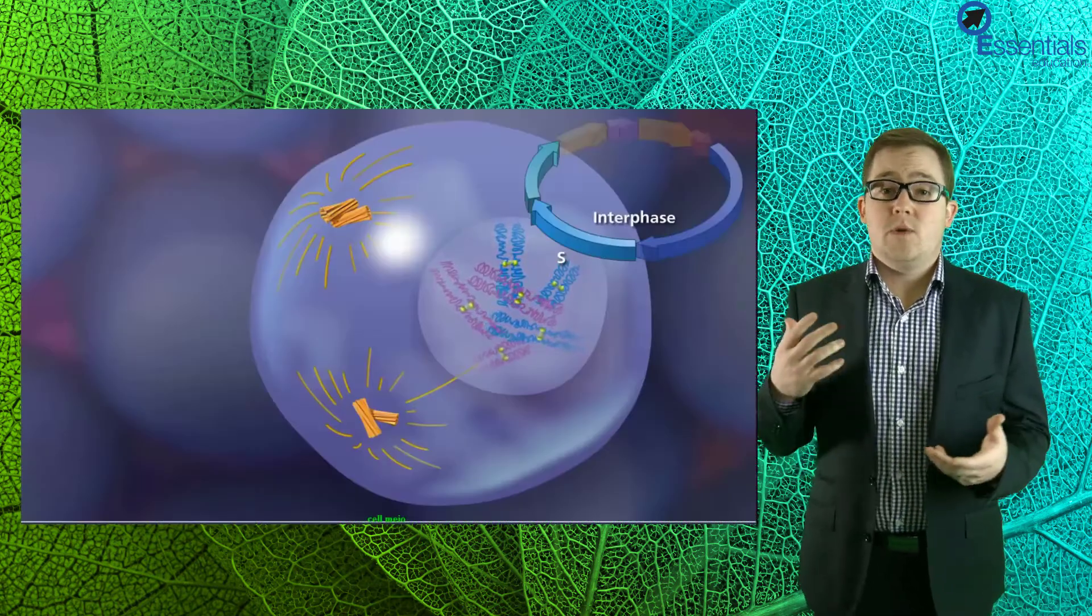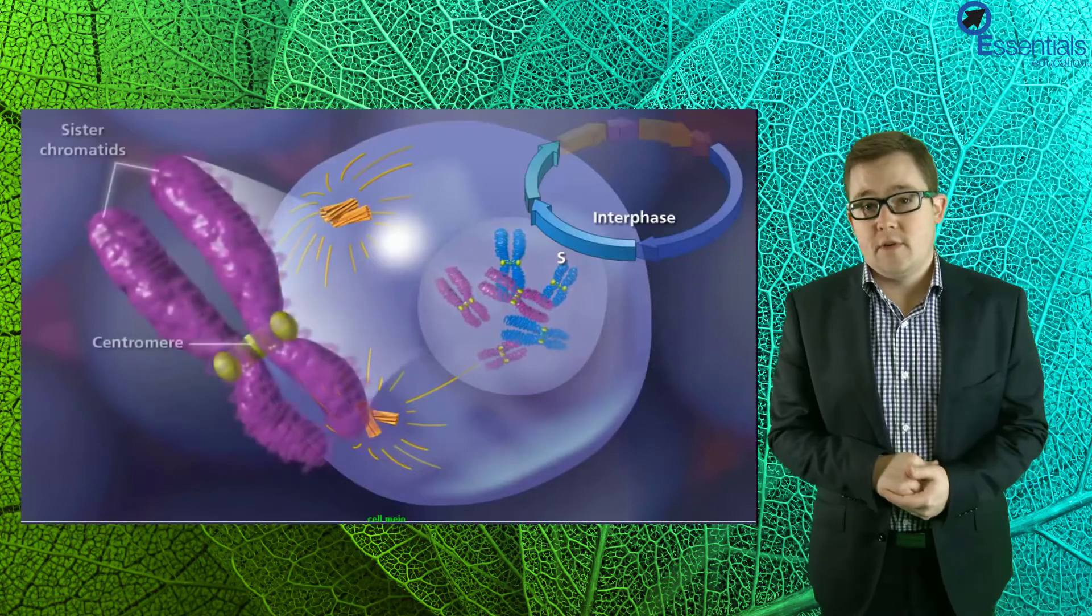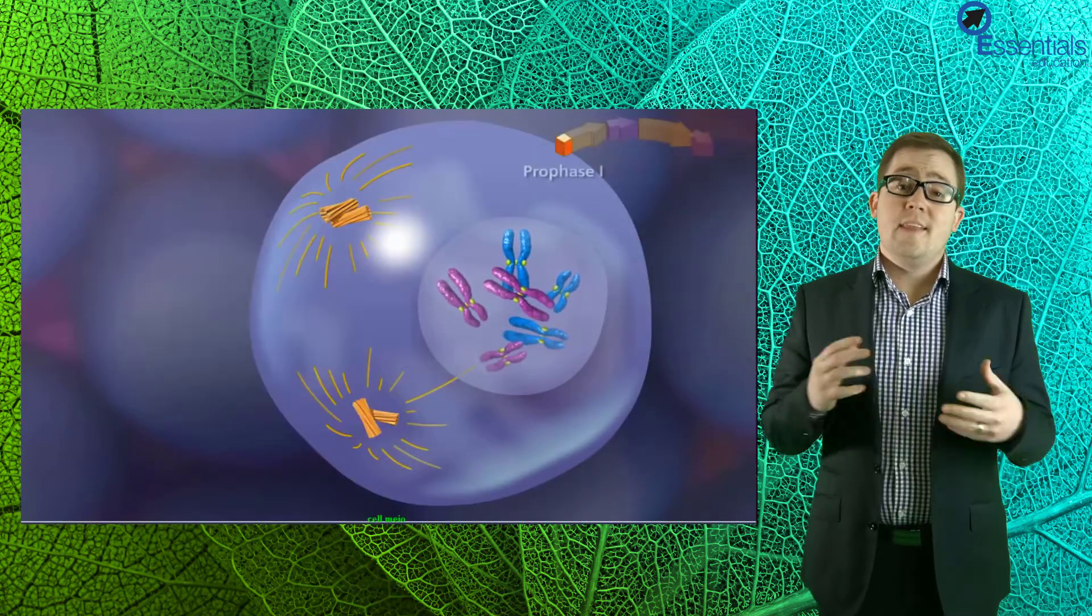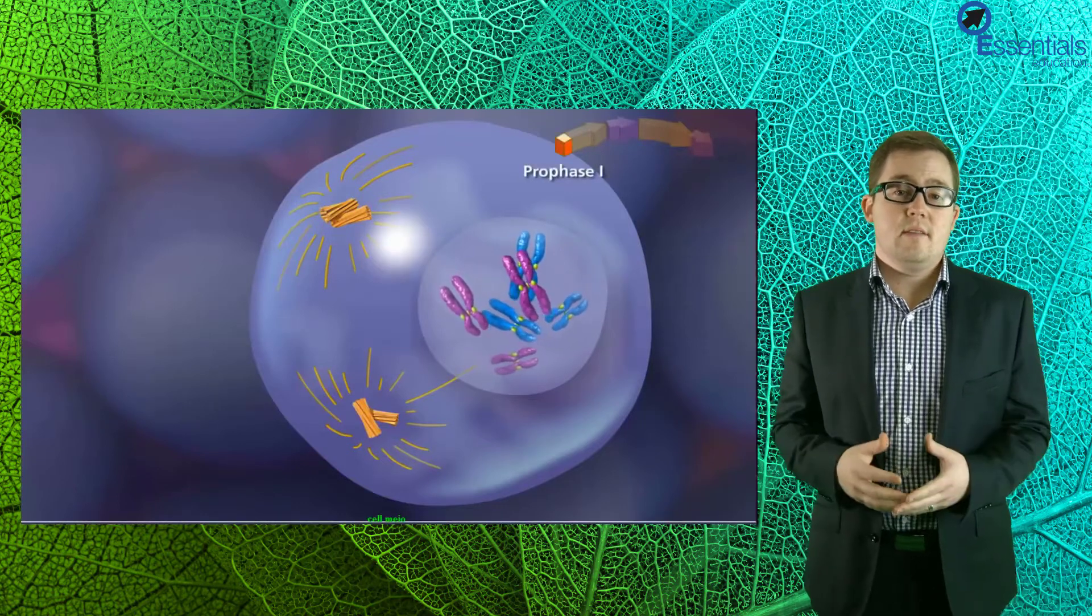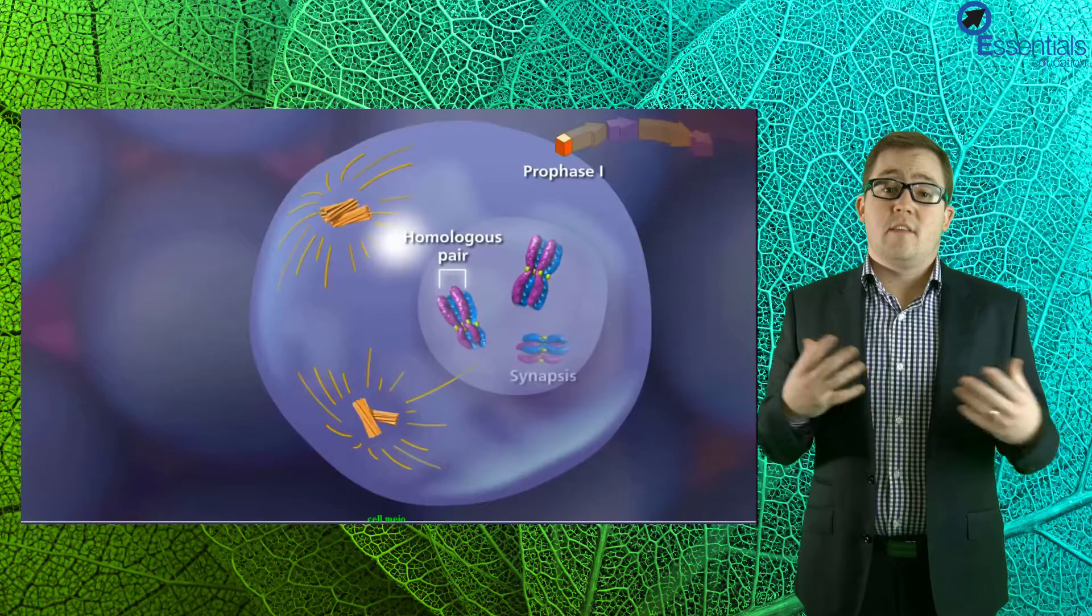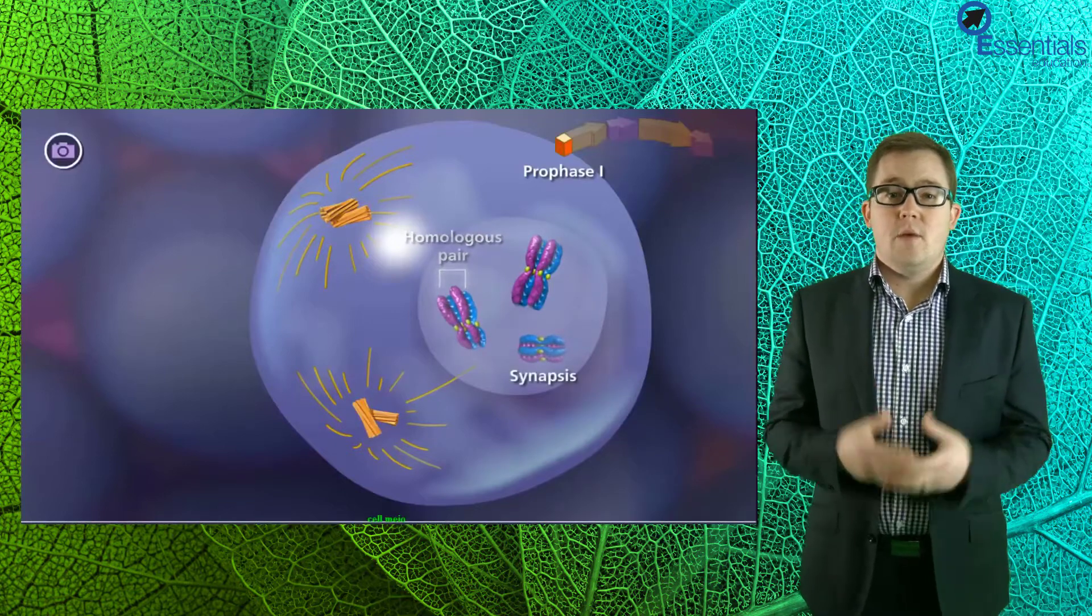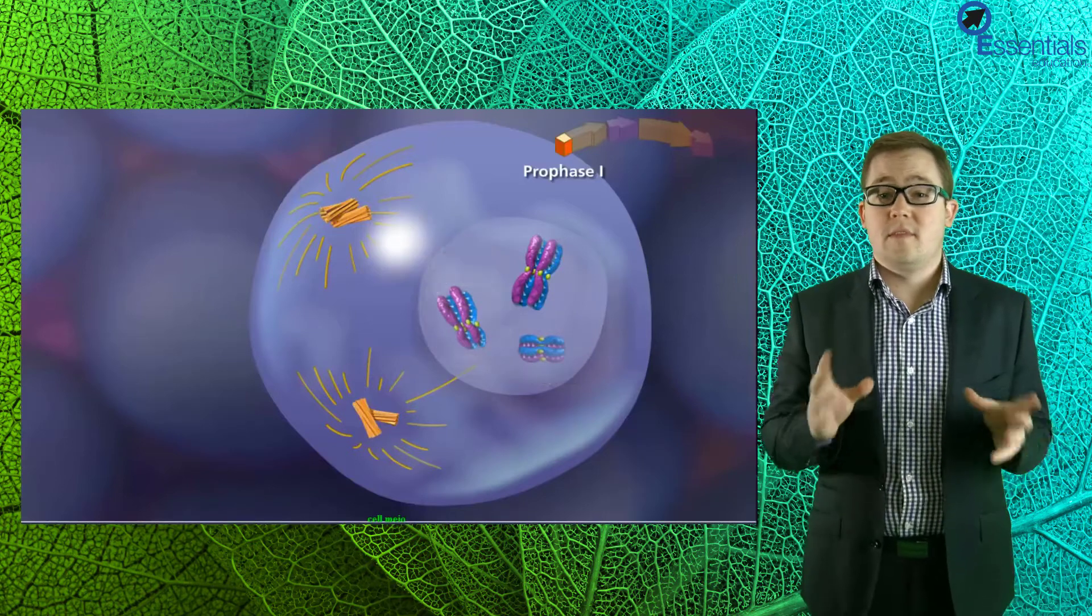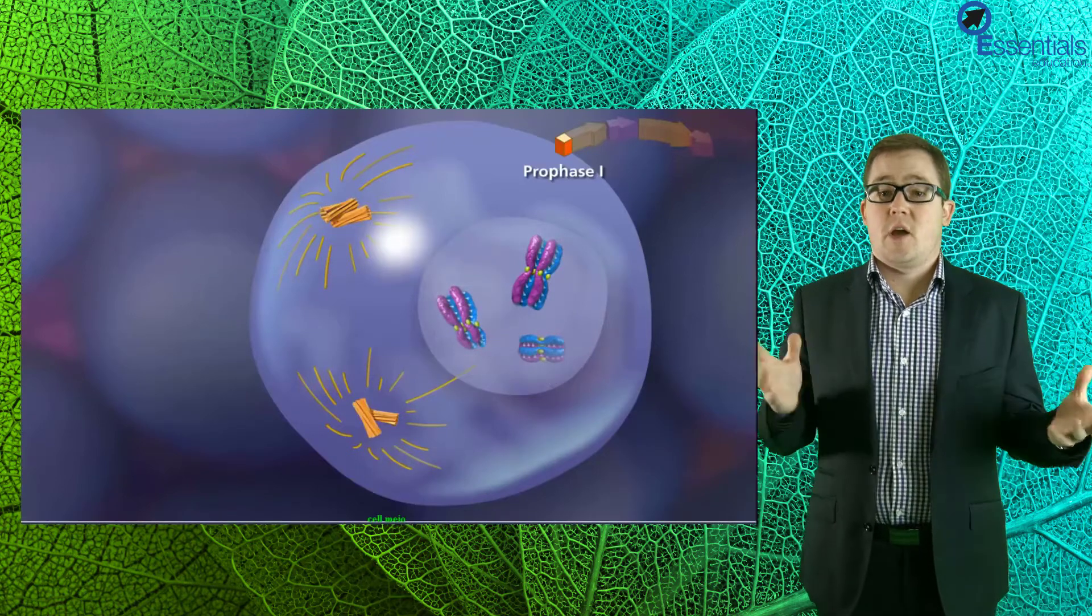DNA replication will occur before meiosis, as it does with any cell division, and then the process starts with prophase I. In this stage, the chromosomes condense and the homologous pairs join up. You can think of this as the start of your school formal. You may arrive in different cars, but when you reach the formal, the first thing you want to do is go and stand by your partner, just like homologous chromosomes do.